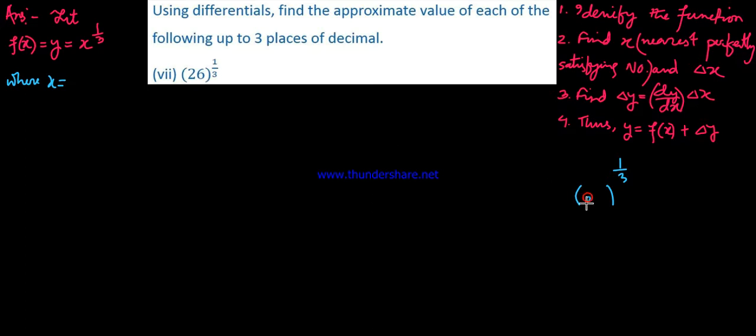27 is a perfect cube because 3 cubed equals 27. Three times three is nine, nine times three is 27. So 27 to the power one by three equals 3, which is a perfect value. So the function is perfectly satisfied when x equals 27.